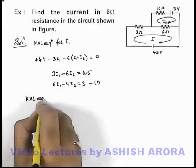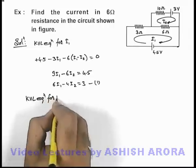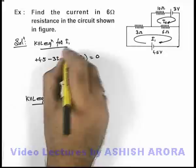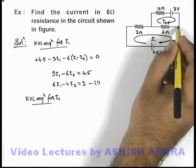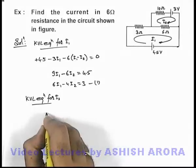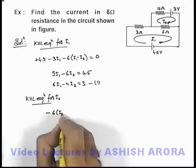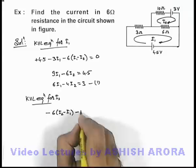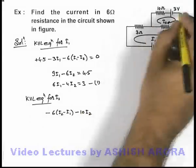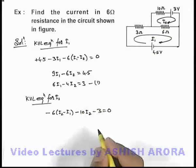Similarly if we write KVL equation for the current i2 in the second loop, here we can start from this point then from this point we'll write negative of 6(i2 minus i1), then if we move up it'll be minus 10i2, then it'll be minus 3 is equal to 0.